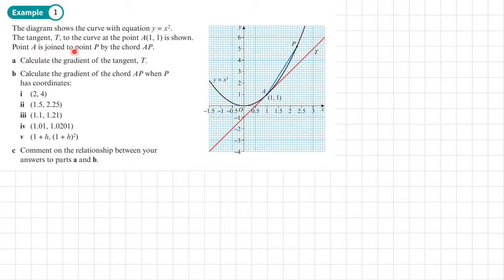Point A is joined to point P by the chord - that's the blue line. Part a: we want to calculate the gradient of the tangent t. To do that, to calculate any tangent, remember we do any gradient: y2 minus y1 over x2 minus x1.